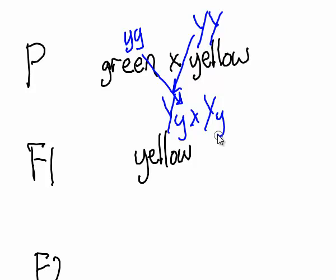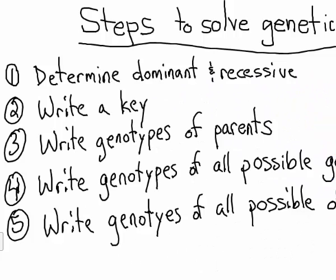If we take a look at our how-to-solve-genetics-problem chart again, we've already determined dominant and recessive. We've written the key. We have the genotypes of our parents. Now we need to write the genotypes of all the possible gametes.